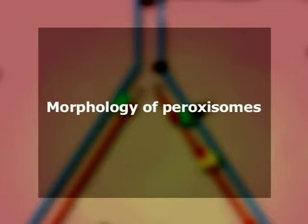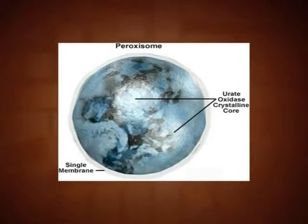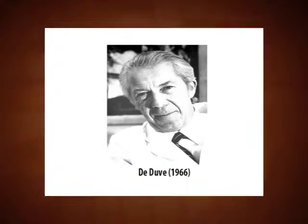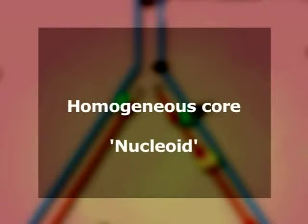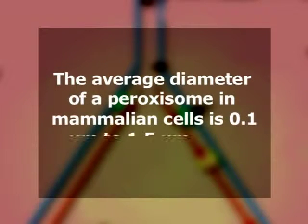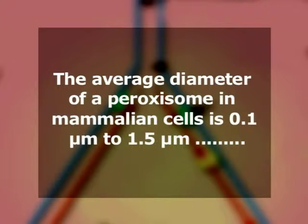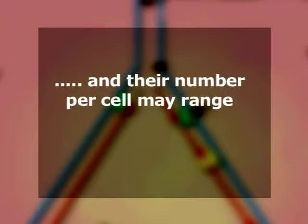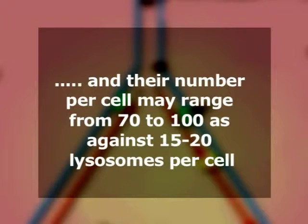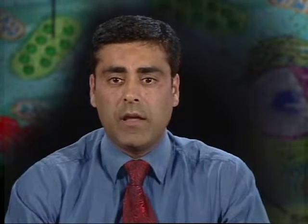Morphology of peroxisomes: Peroxisomes, also known as microbodies, are ovoid granules surrounded by a single membrane. Peroxisomes were discovered in 1966 by De Duve and his co-workers. They contain a fine granular substance condensing in the center to form an opaque, homogeneous core called the nucleoid. The average diameter of a peroxisome in a mammalian cell is 0.1 to 1.5 micrometers. Their number per cell may range from 70 to 100, as against 50 to 20 lysosomes per cell. They are particularly abundant in liver and kidney cells.